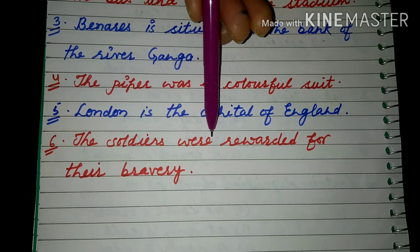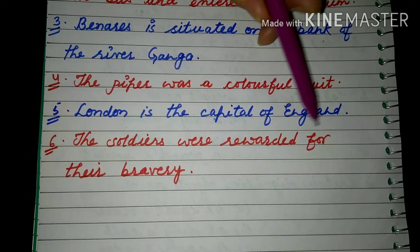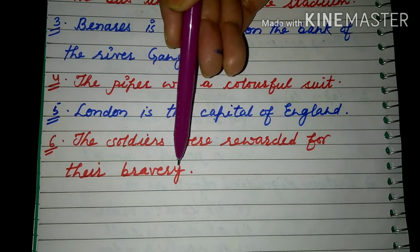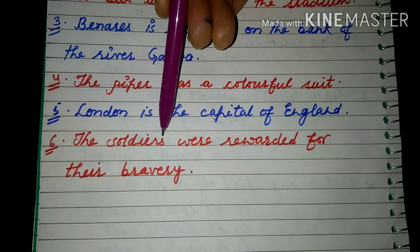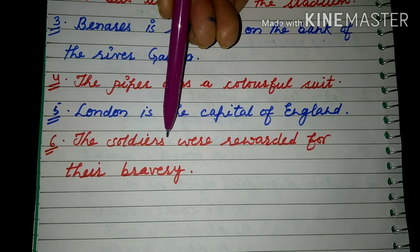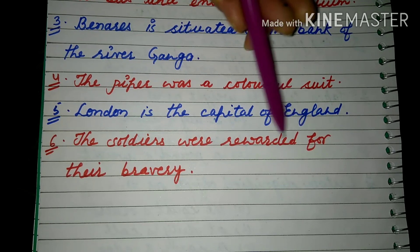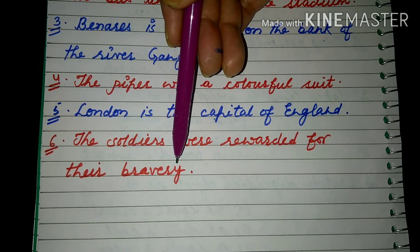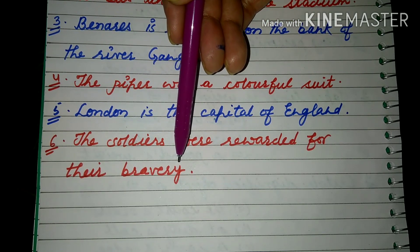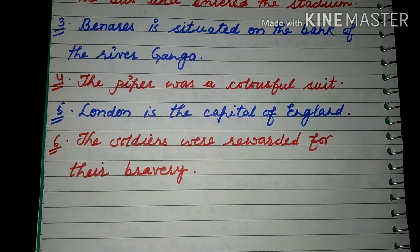'The soldiers were rewarded for their bravery.' Soldiers is a common noun, rewarded is a verb, and bravery is an abstract noun.